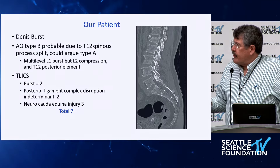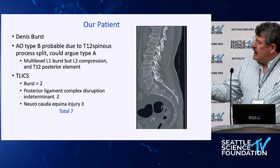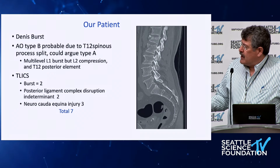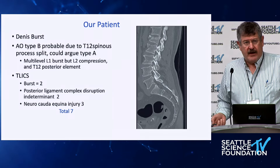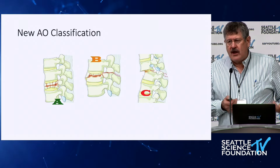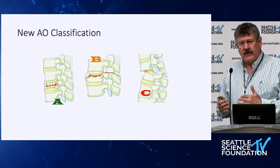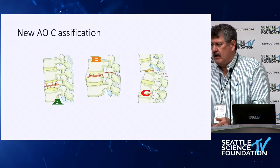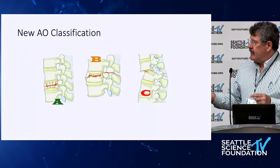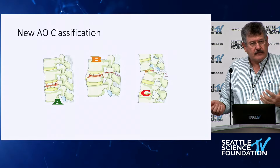So if we look at our patient using these prior systems, Francis Dennis would call this a burst; by the old AO it would be a type B — you could argue maybe just an A. T-LEX would be at least a burst, maybe indeterminate posterior ligament, but with a cauda injury it'd be a seven. But if you called somebody and said 'this is a seven,' they don't know what you're talking about. What the new AO classification does is simplify the old one and incorporate the T-LEX components. We have A, B, and C: A is loss of ability to resist axial load, B is loss of the tension band's ability to resist flexion — literally going back to the two-column concept — and C are fracture-dislocations, translational-rotational injuries.